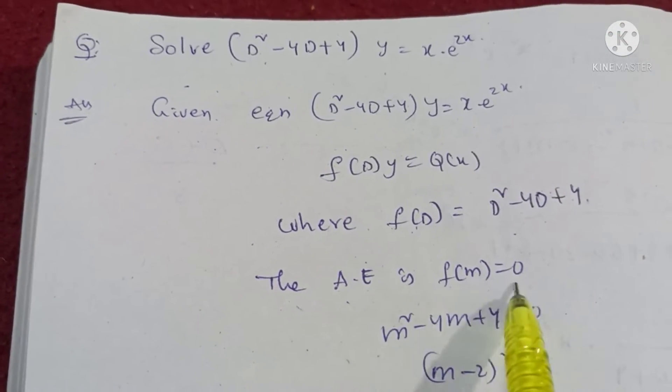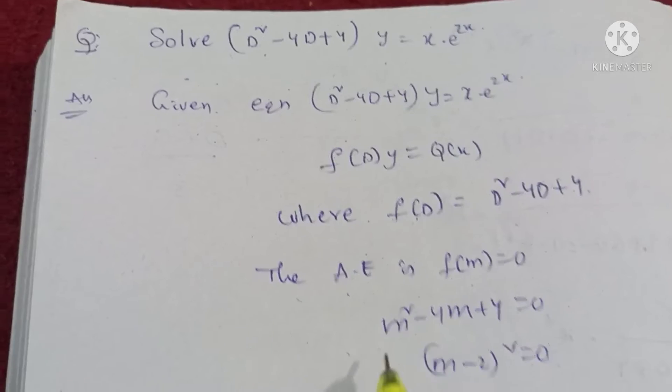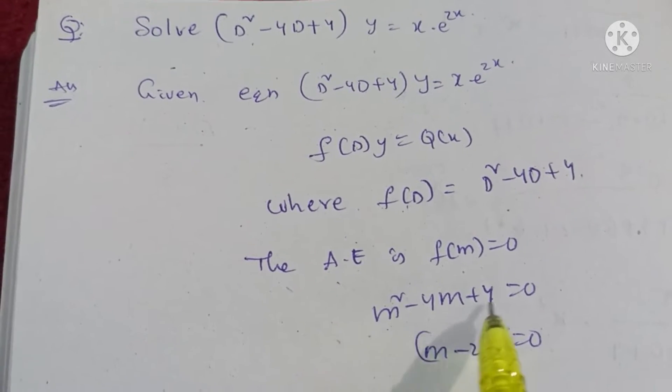Auxiliary equation is f of m is equal to 0. D replaced with m. m square minus 4m plus 4 is equal to 0.